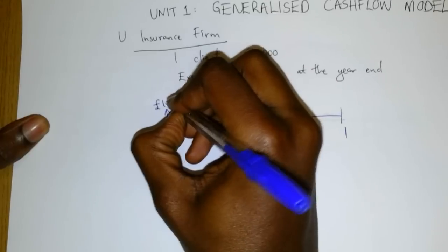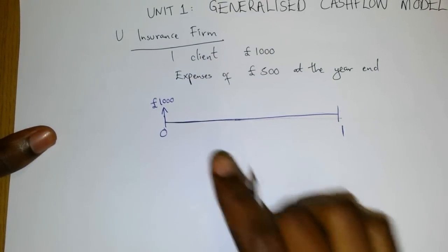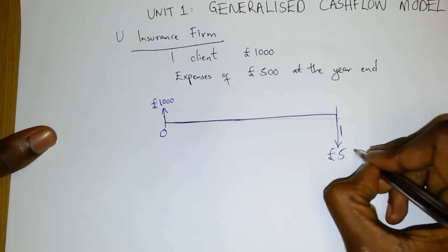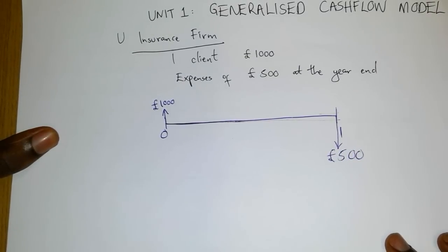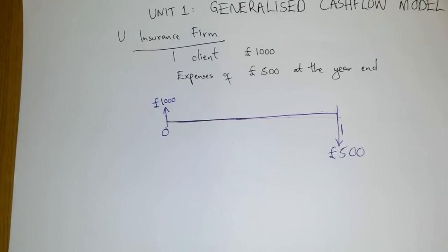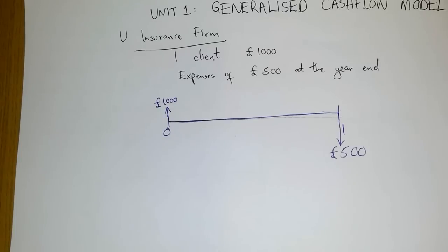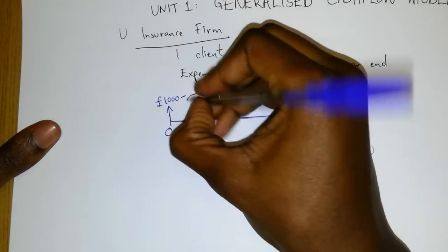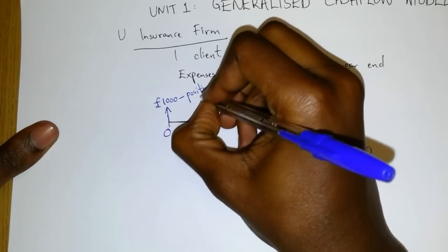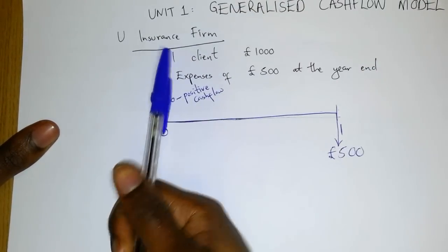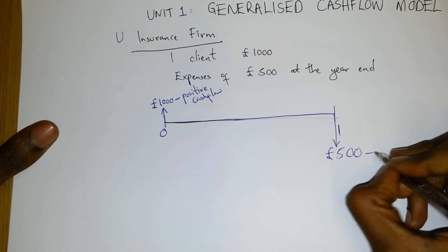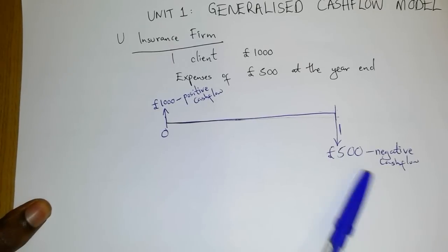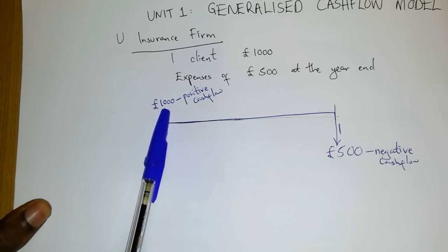At time zero, this client will pay the insurance company a thousand pounds as premium. At the end of the year, this insurance company is going to pay out five hundred pounds to cover the expenses through the year. What we have here is a cash flow on a timeline. At time zero, the thousand pounds is a positive cash flow to the insurance firm, while the five hundred pounds at the end is a negative cash flow, because the insurance company has to pay out five hundred pounds while it gains a thousand pounds.